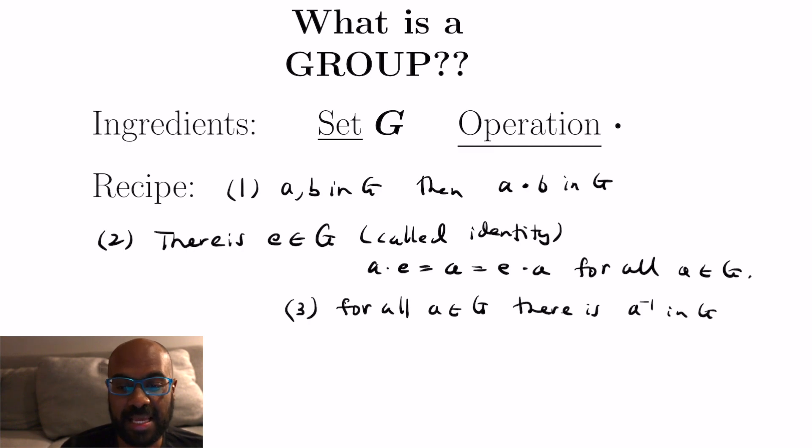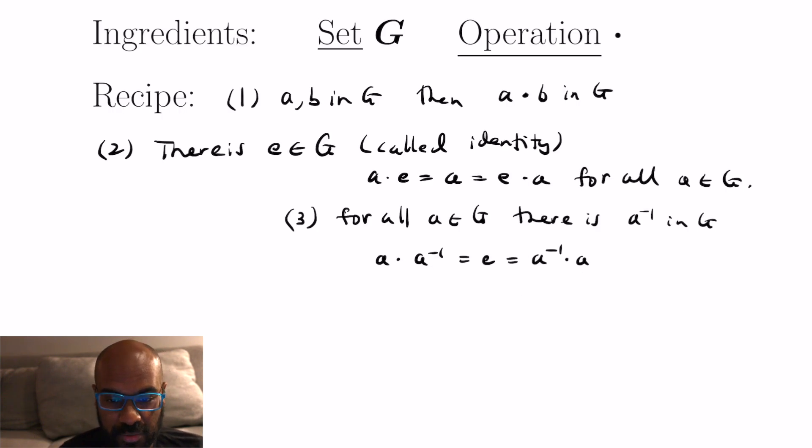Thirdly, if we take any element in our group, we'll require a way to invert it. The inverse applied to the element we started with in either direction with the group operation that we have will have to be the identity. So you can think of this as like reciprocals in real numbers under multiplication or when we add integers like negation.